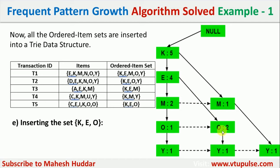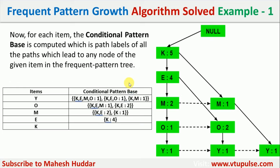Once the FP-tree is built, the next step is to identify conditional pattern bases. For every item (Y, O, M, E, K written in ascending order of frequency), we identify the path needed to reach that item. For Y, there are three paths: K, E, M, O (frequency 1); K, E, O (frequency 1); and K, M (frequency 1). We record these paths and their frequencies as the conditional pattern bases for Y.